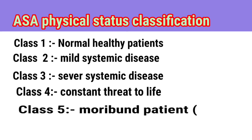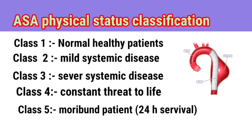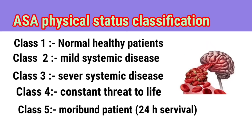Class 5 is a moribund patient with less than 24 hours survival. It means if we don't treat or operate, these patients will lose their life. Examples include ruptured abdominal aortic aneurysm, massive trauma, and extensive intracranial hemorrhage with mass effect.